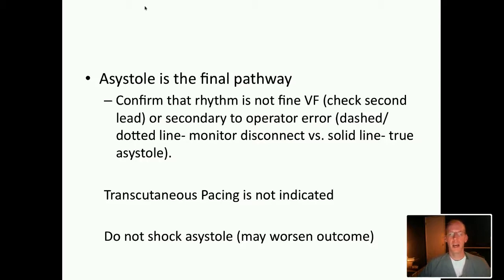Now, asystole — how is it different from PEA? PEA is an organized electrical rhythm without a pulse. Asystole is basically no rhythm; it's the final pathway. All rhythms eventually end up in asystole. When presented with an asystolic patient, you need to decide: A) is it real? And B) is it potentially another rhythm?